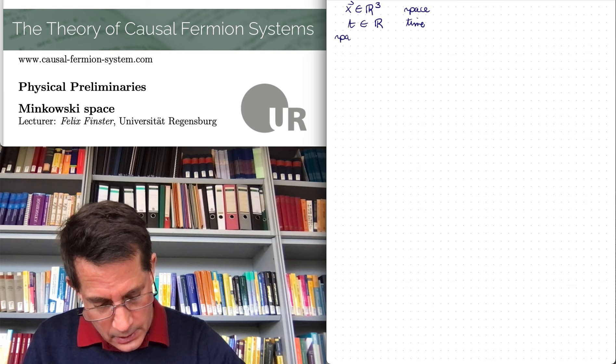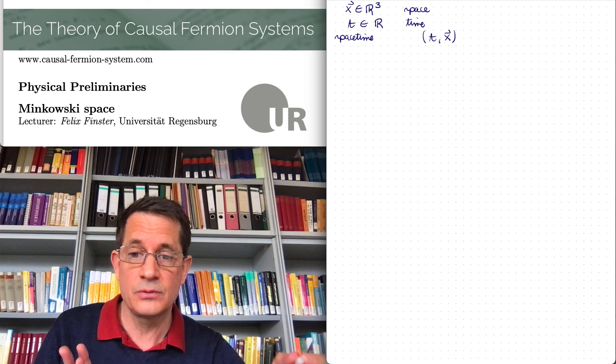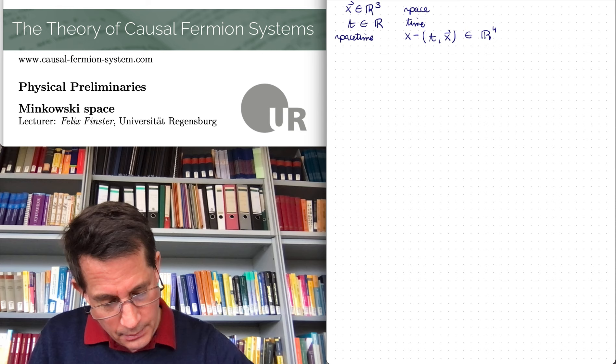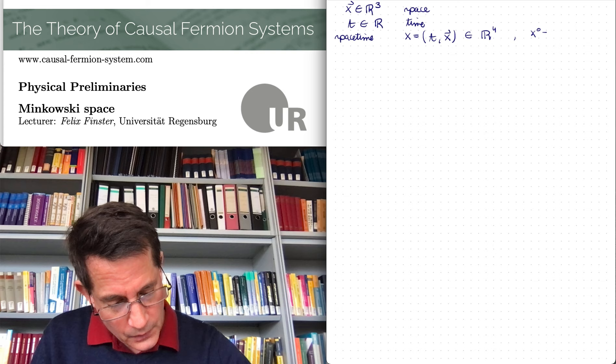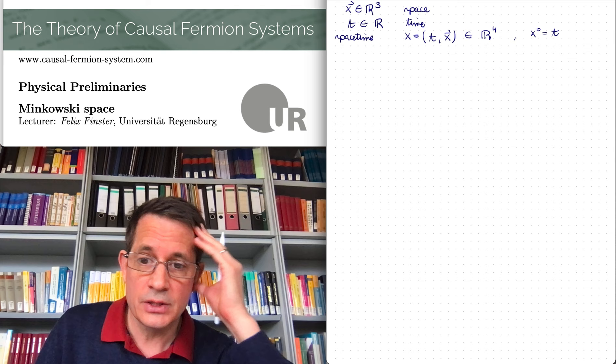In special relativity one combines space and time to spacetime. If I do this, I combine the t-coordinate with the three spatial coordinates x, y, z of a Cartesian coordinate system, to a vector in R⁴, usually denoted by x without a vector arrow. So x⁰ is equal to t and x¹, x², x³ are the three spatial coordinates. But now there are more structures in spacetime, in particular the causal structure.